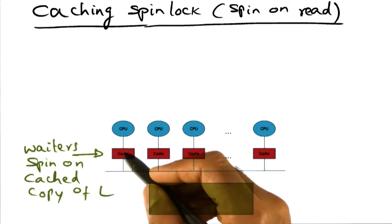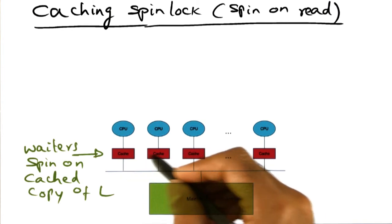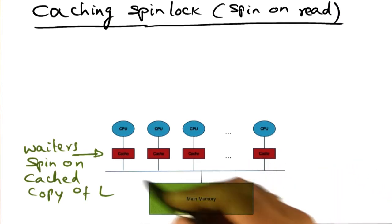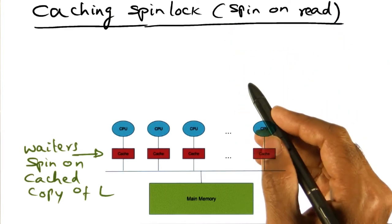Because when you are spinning on the local cached value of the lock, if the value changes in memory, these guys are going to notice that. That's the principle behind the cache coherence that is implemented in hardware. And so we can exploit that fact in implementing a more efficient way of spinning, which is called spin on read.